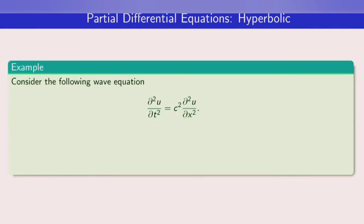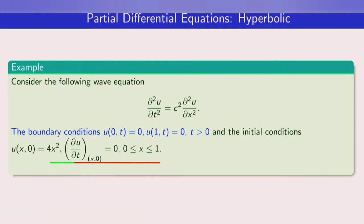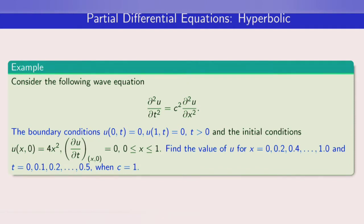Consider the following specific wave equation: d²u/dt² = c²(d²u/dx²), a particular case of hyperbolic PDE. The boundary conditions are u(0, t) = 0 and u(1, t) = 0 for t > 0, with x ∈ [0, 1]. The initial conditions are u(x, 0) = 4x² and ∂u/∂t = 0 at t = 0. The problem is to find u for x = 0, 0.2, 0.4, …, 1.0 and t = 0, 0.1, 0.2, …, 0.5, taking c = 1, meaning the wave speed is assumed to be 1.